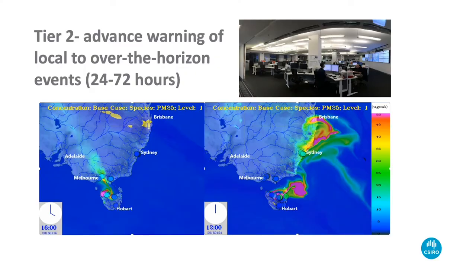This tier 2 forecasting runs a model that takes in all of the emissions from fires, the Bureau of Meteorology weather forecasts, and also emissions from many other sources of PM2.5 - cities, domestic wood combustion from wood heaters, sea salt, and a whole bunch of other things. In the end, it's the total loading of PM2.5 that matters for health. This tier 2 information operates at a large scale, spanning the whole of Australia, and I'll give you an example in a moment as to why that's important.